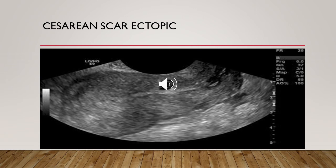For cesarean scar ectopic pregnancy, the incidence is 1 in 2000. It is diagnosed by ultrasound showing empty uterine cavity, a sac or solid mass of trophoblast located anteriorly at the level of the internal os, embedded at the site of the previous cesarean section as shown in the slide, a thin or absent layer of myometrium between the cesarean section sac and the bladder, and evidence of prominent trophoblastic/placental circulation on Doppler with an empty cervical canal. The sac is located mainly within the scar, between an empty uterine cavity and empty cervical canal.